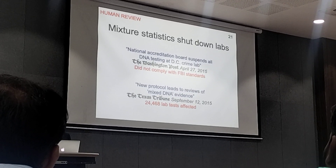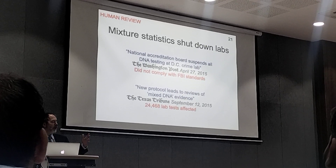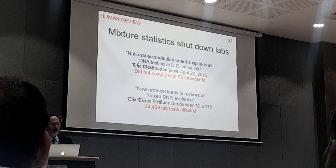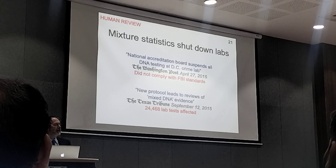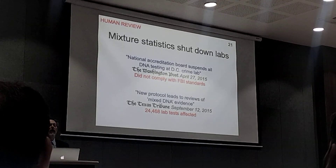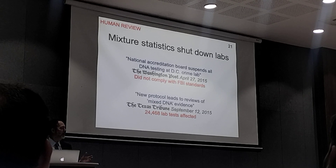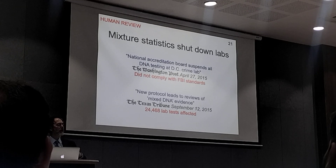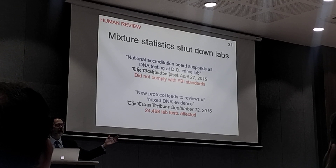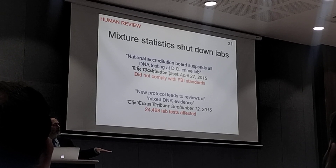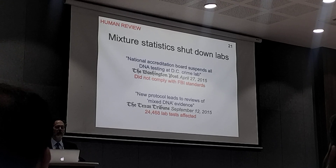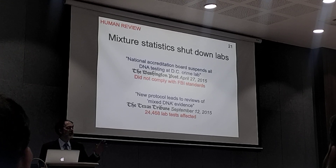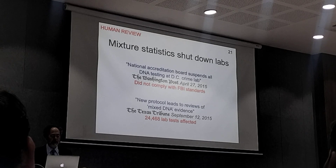By 2015, once lawyers — even prosecutors — began hearing about all this confusion, they started shutting down laboratories in Washington D.C. and Texas. How come the match statistics kept changing? The answer, to a scientist, is that the method of interpretation changed. You go from one threshold with average match statistics of a million down to two thresholds with average match statistics of a hundred. Of course there'll be a change. That's very hard to explain to politicians and lawyers. Easier to shut down the lab and start again, at least in some states.